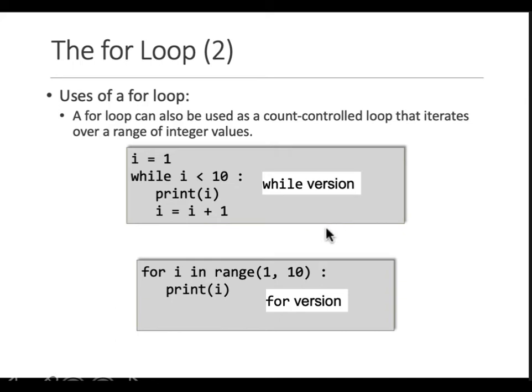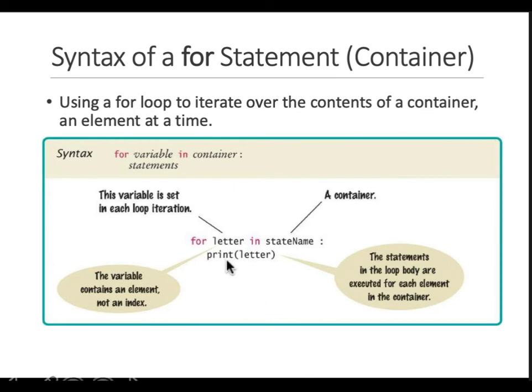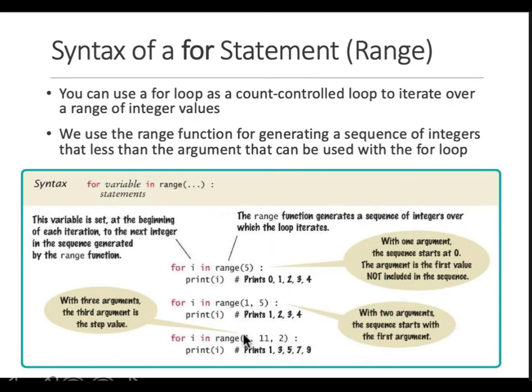Essentially, what's the syntax of a for? Syntax is for the looping variable in the container. For and in are keywords. Your looping variable will be the one that you're checking, and then you're using that variable throughout your block or inside the for. The container is whatever that container is, whether it's a string, whether it's a range, whether it's a list, whether it's a dictionary, and so on.